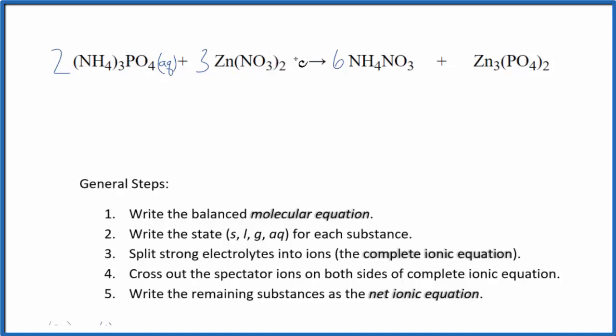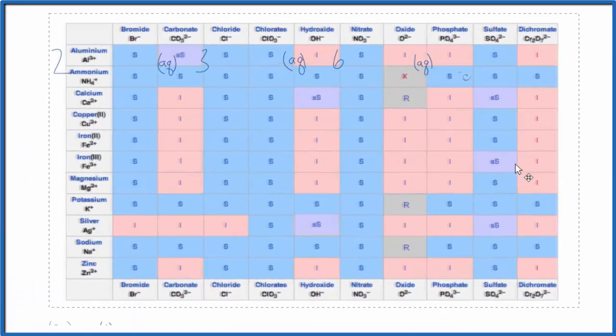Zinc nitrate, nitrates are very soluble, AQ. And then here we have ammonium nitrate, that'll be soluble. But when we get to the zinc phosphate, phosphates are often insoluble. So I would expect this to be insoluble, but I want to check on a solubility chart just to make sure.